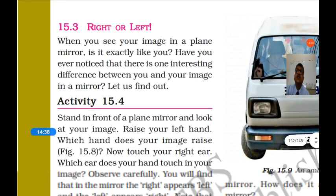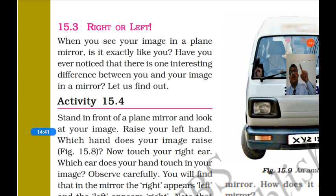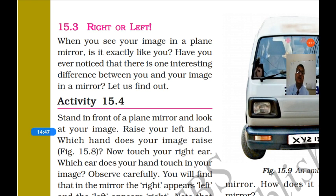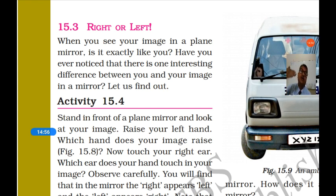So these are three properties of a plane mirror image: first, the image is erect and the same size as the object; second, it cannot be caught on a screen; and third, the image is at equal distance from the mirror as the object.